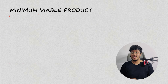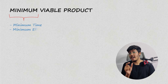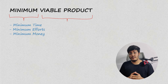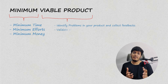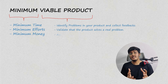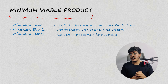So in a nutshell, 'minimum' refers to the time, effort, and money you are spending. A 'viable product' is the product with the core set of features which are needed to identify the problems related to your product and collect feedback, validate that the product solves a real problem, assess the market demand for the product, and determine whether customers are willing to pay for your product.